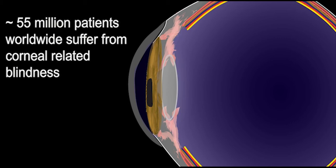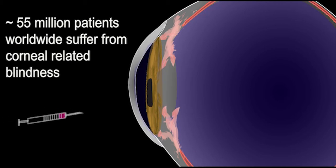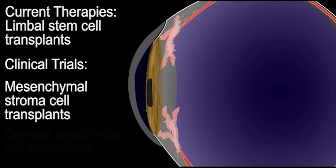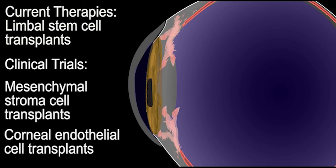Cloudiness in any of the three corneal layers can occur due to disease or injury. Limbal stem cell transplant repairs the outer epithelium and the procedure is already approved in Europe. Mesenchymal stromal cells and corneal endothelial cells are being explored as regenerative treatments for the other two layers.